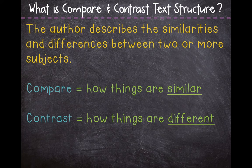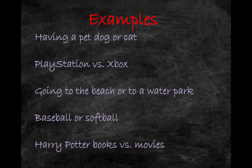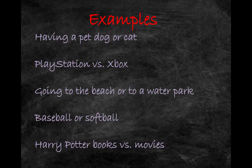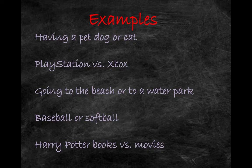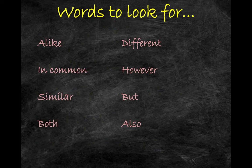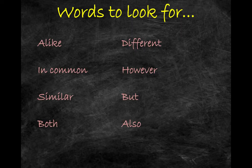Our last text structure is compare and contrast. Compare and contrast text structure is when the author describes the similarities and differences between two or more subjects. When we compare, we find things that are similar or alike; when we contrast, we find things that are different. Examples include reading about pet dogs and cats, PlayStation versus Xbox, or going to the beach versus a water park. Signal words: alike, different, in common, however, similar, but, both, and also.